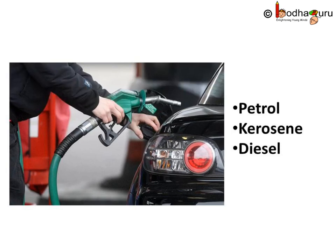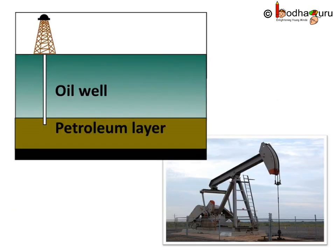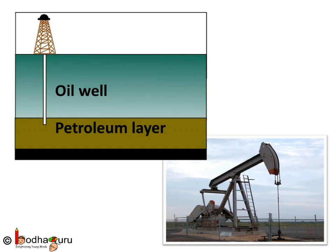All of us know how important petrol, diesel, etc. are. We get these fuels from petroleum. We also get kerosene from petroleum. Petroleum needs to be refined in the refineries to get these fuels. Raw petroleum or crude oil is a dark, oily liquid with an unpleasant smell. It is extracted from earth's crust through a deep oil well. A huge pump extracts the petroleum through this deep oil well.